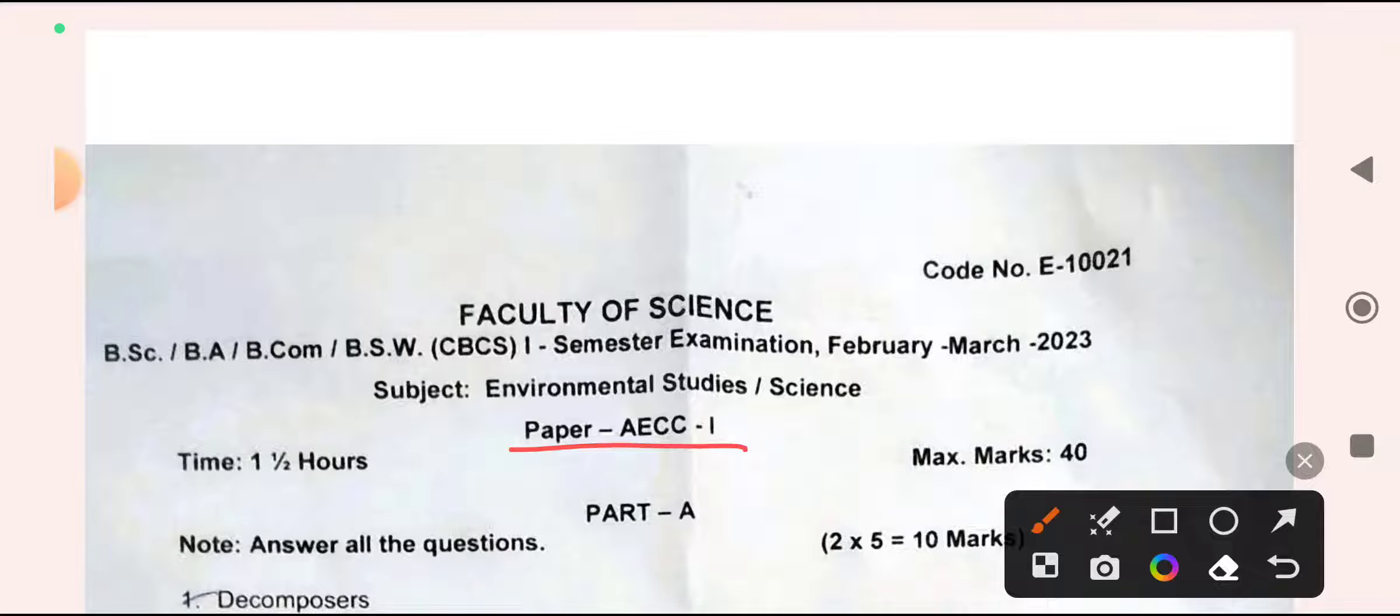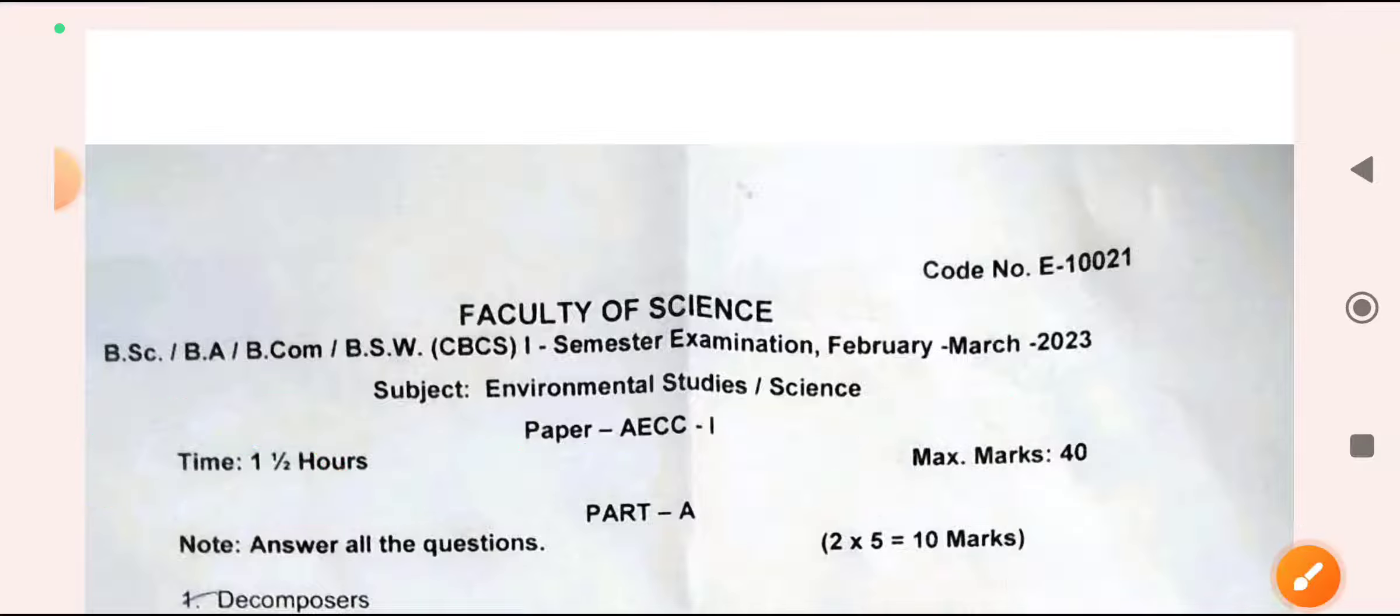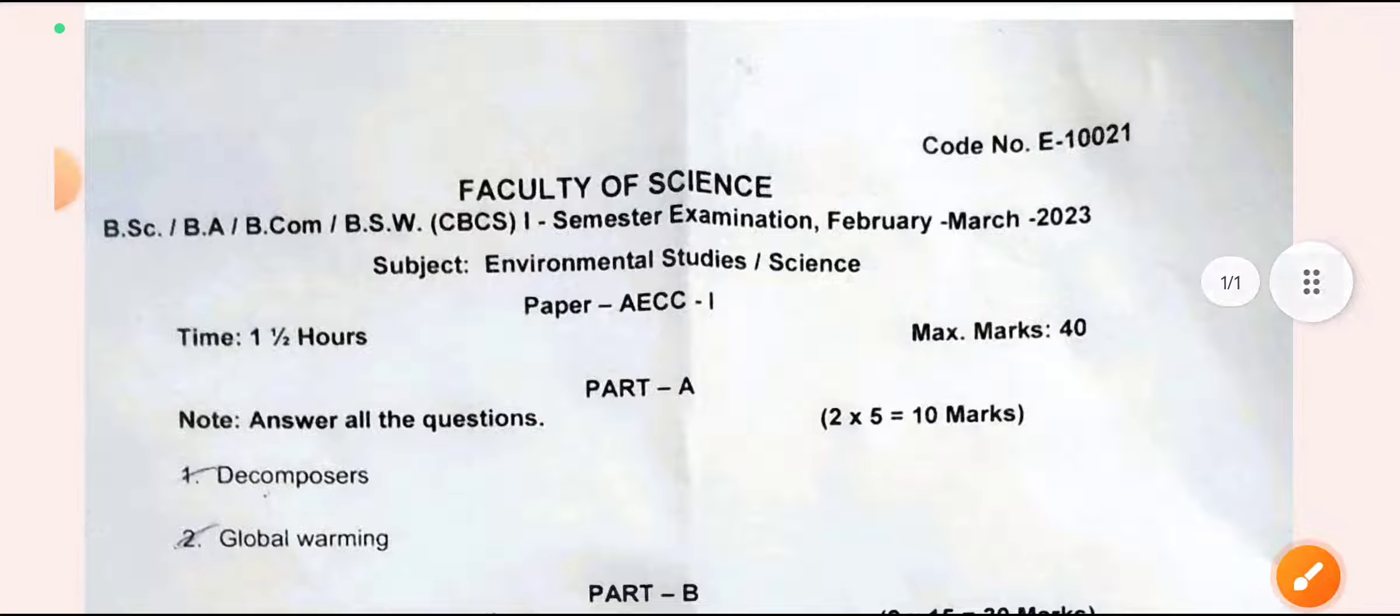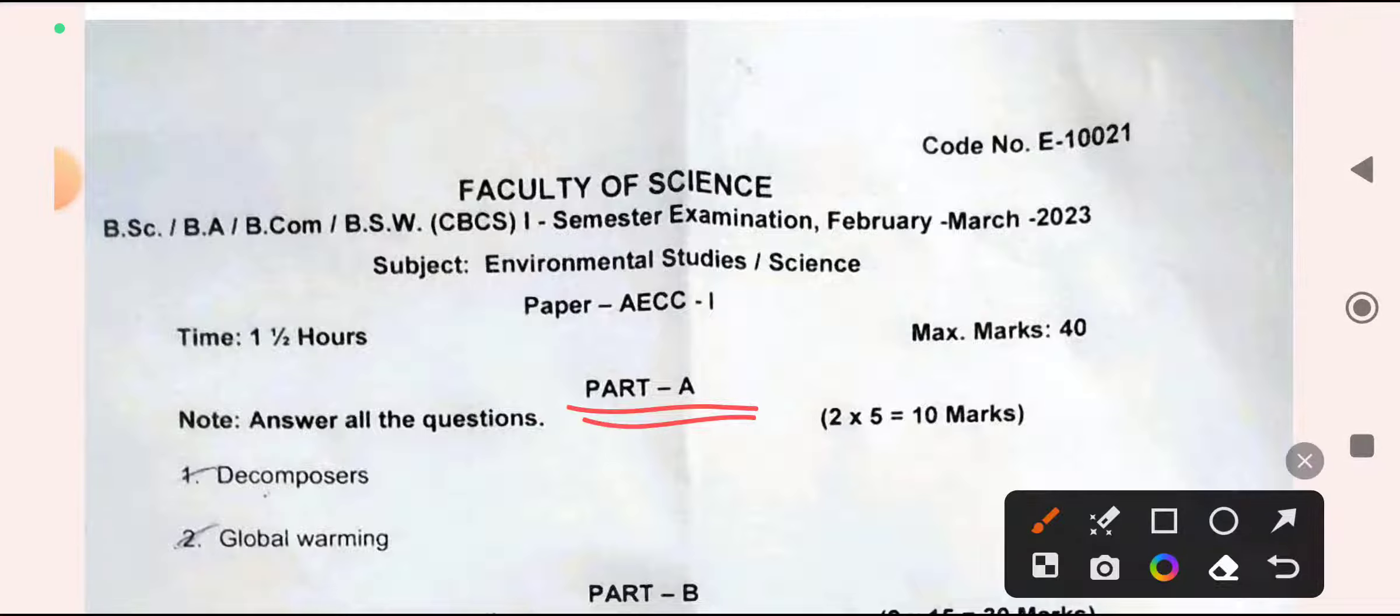Paper AECC-1, duration of exam is one and a half hours and total marks will be 40 marks. That is why it is one and a half hours only. In Part A you'll get two questions. You need to answer all two.